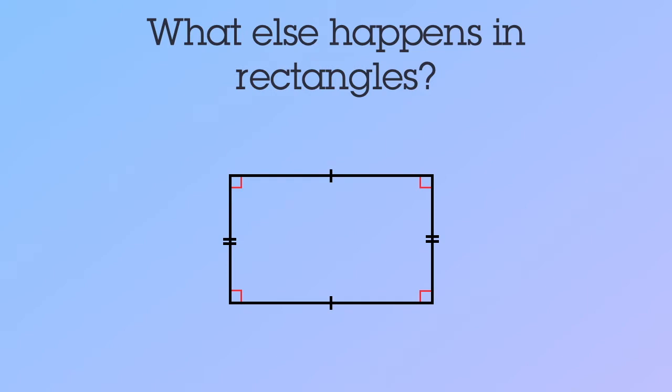Let's see what happens when we draw a diagonal. Now this diagonal cuts the rectangle into two right triangles. Let's focus on the bottom one.